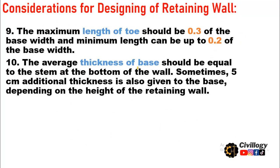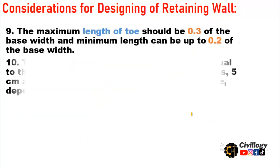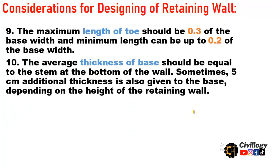Consideration ten: The thickness of the base slab should be equal to the width of the stem at the bottom. This thickness of the base should be equal to the width of the stem at its base. You may also add an extra 5 centimeters to it. Sometimes 5 centimeters of additional thickness is also given to the base, depending on the height of the retaining wall.